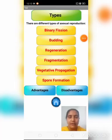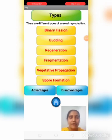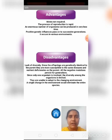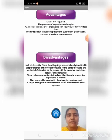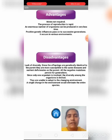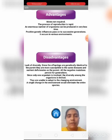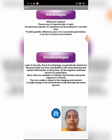Now, let us see the advantages and disadvantages of asexual reproduction. Advantages: mates are not required — only a single parent is enough. The process is rapid, so a new generation forms in a very short time. An enormous number of organisms can be produced in very less time. Positive genetic influences pass on to successive generations, and it occurs in various environments. Disadvantages: lack of diversity — since offspring are genetically identical to the parent, they are more susceptible to the same diseases and nutrient deficiencies. All negative mutations persist for generations. Since only one organism is involved, diversity is limited, and organisms are unable to adapt to changing environments. A single environmental change could eliminate the entire species.